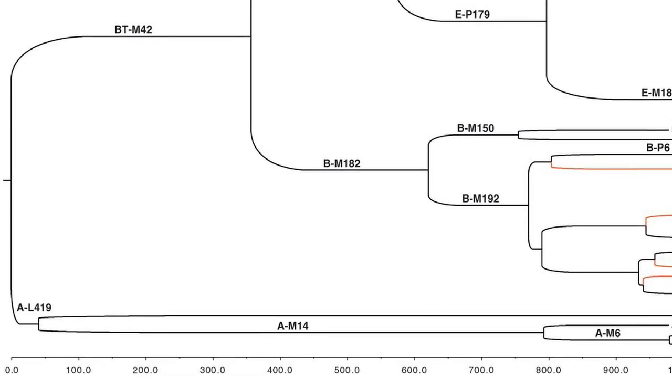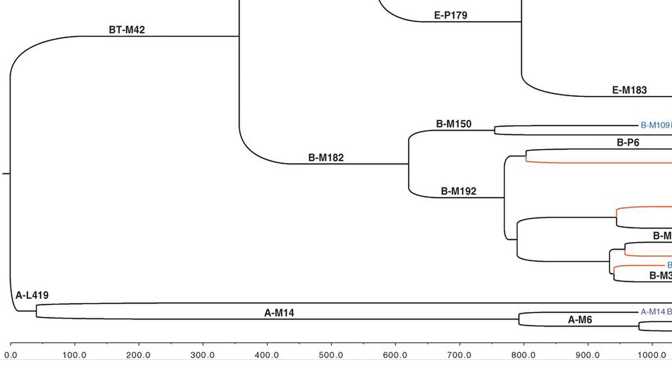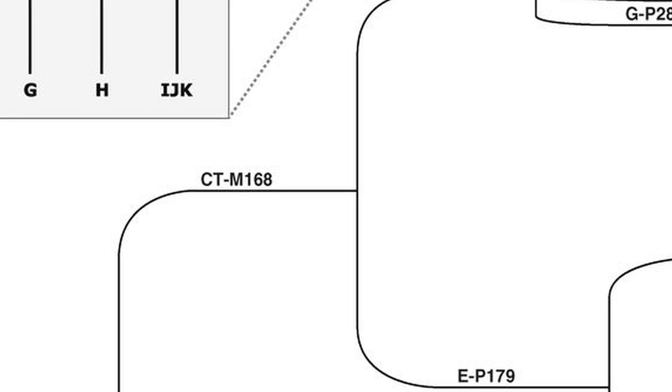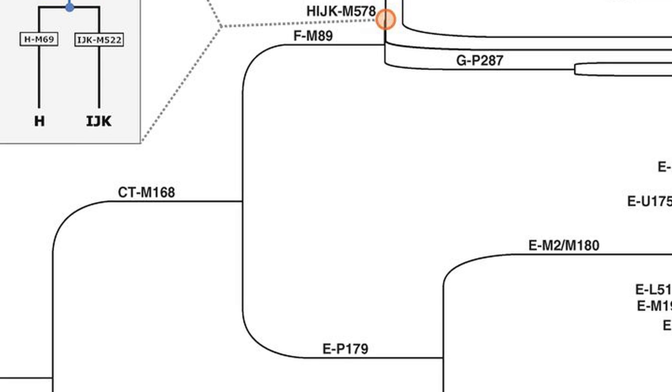Soon afterward, haplogroup A began dividing into several more haplogroups. At the same time, haplogroup B divided into haplogroups B and C. Haplogroup C then further divided into haplogroups E and F.